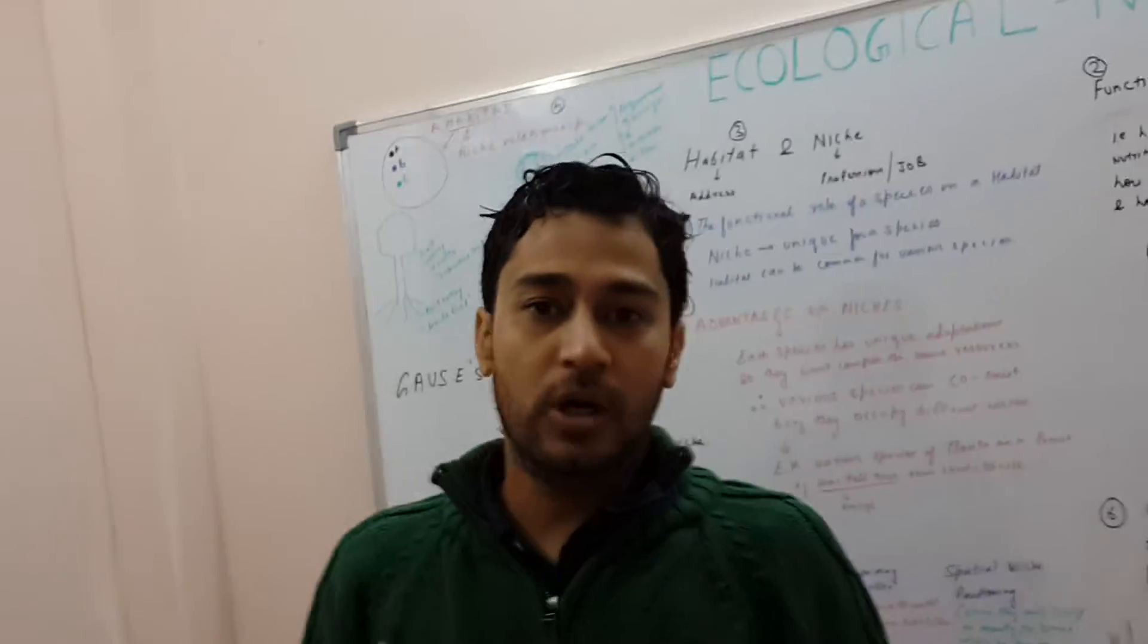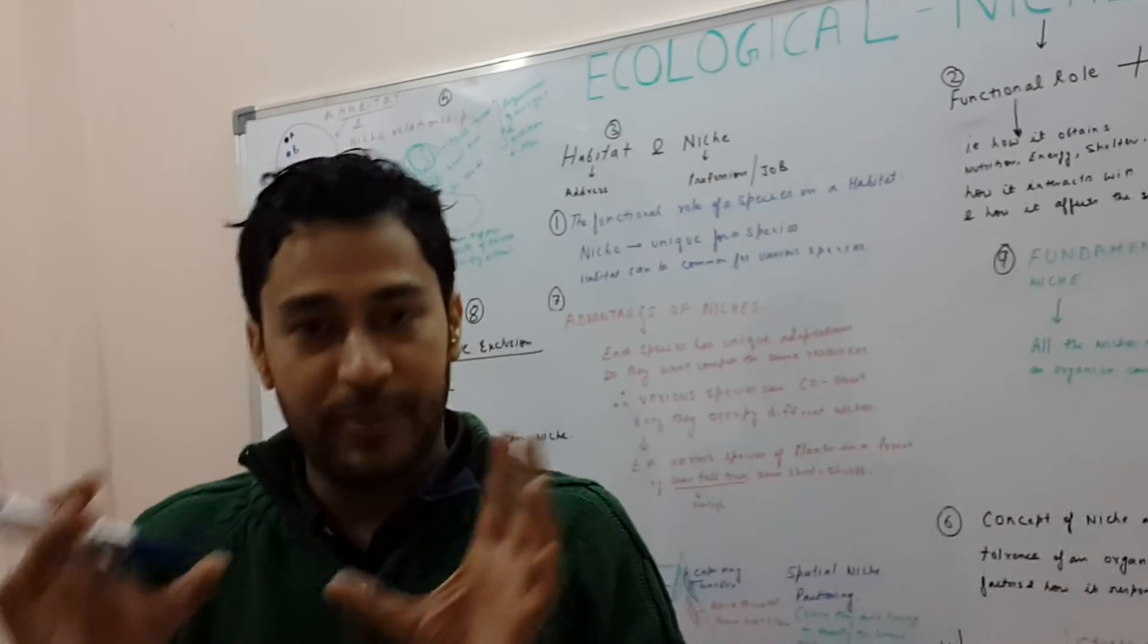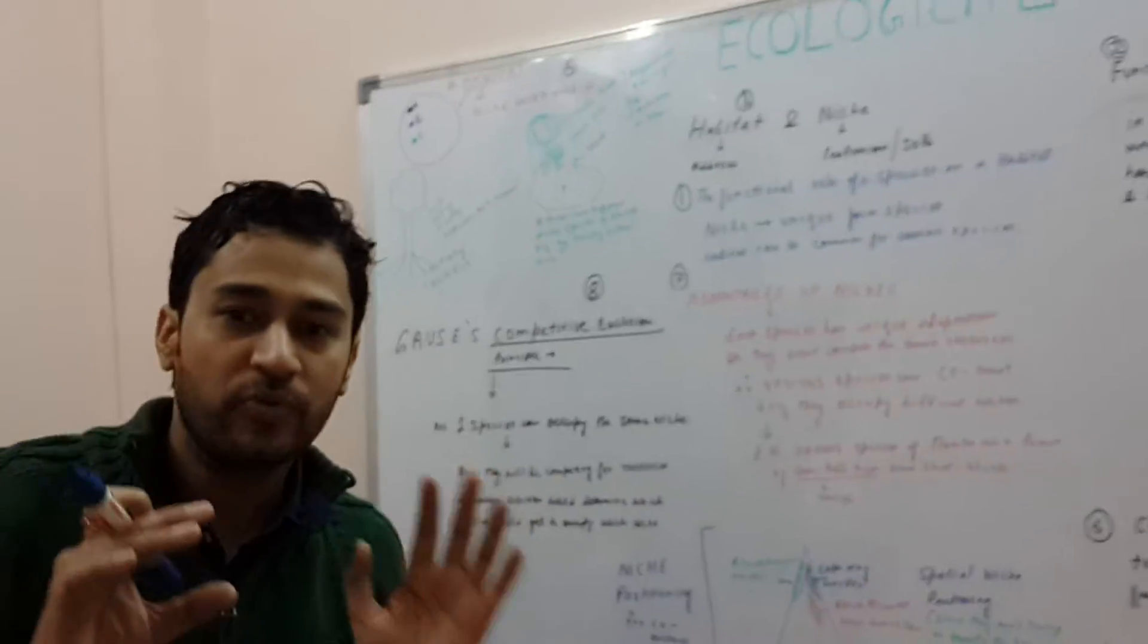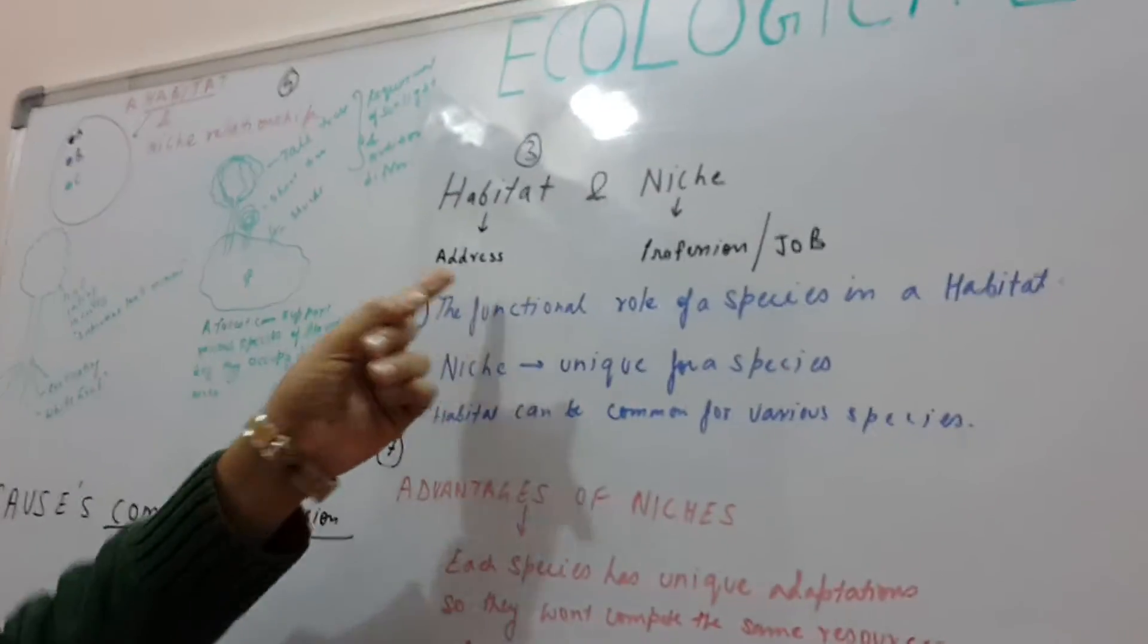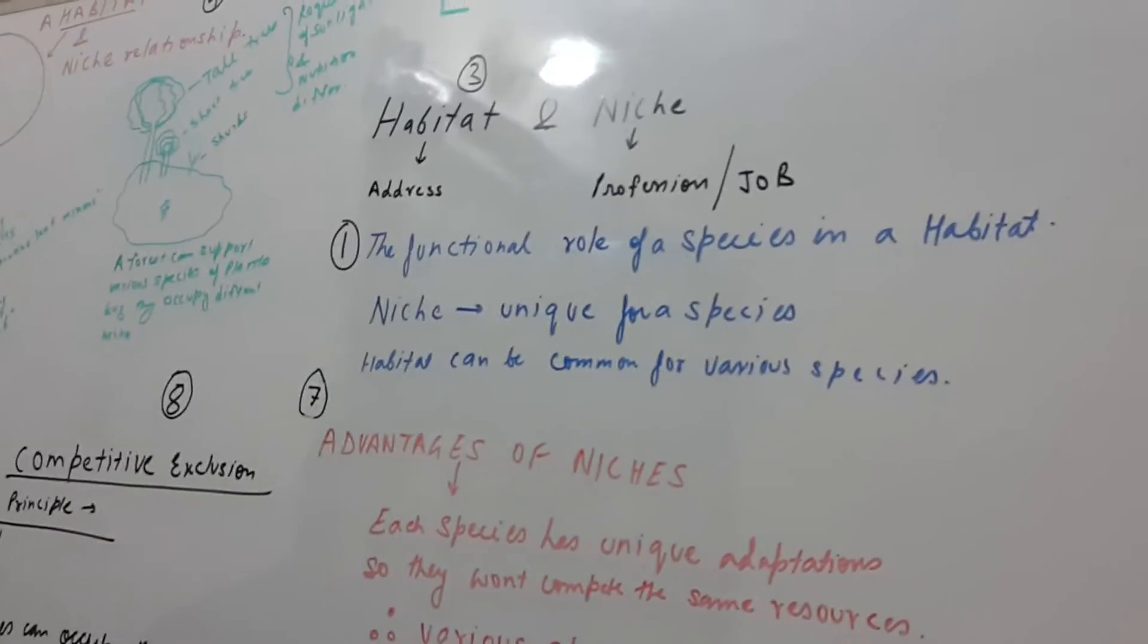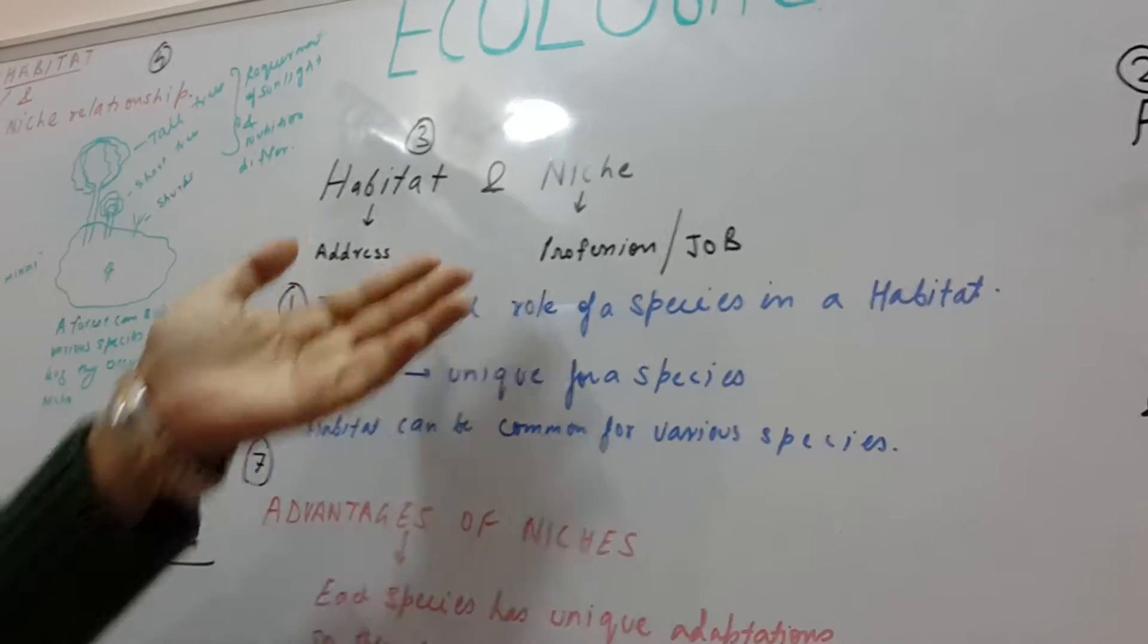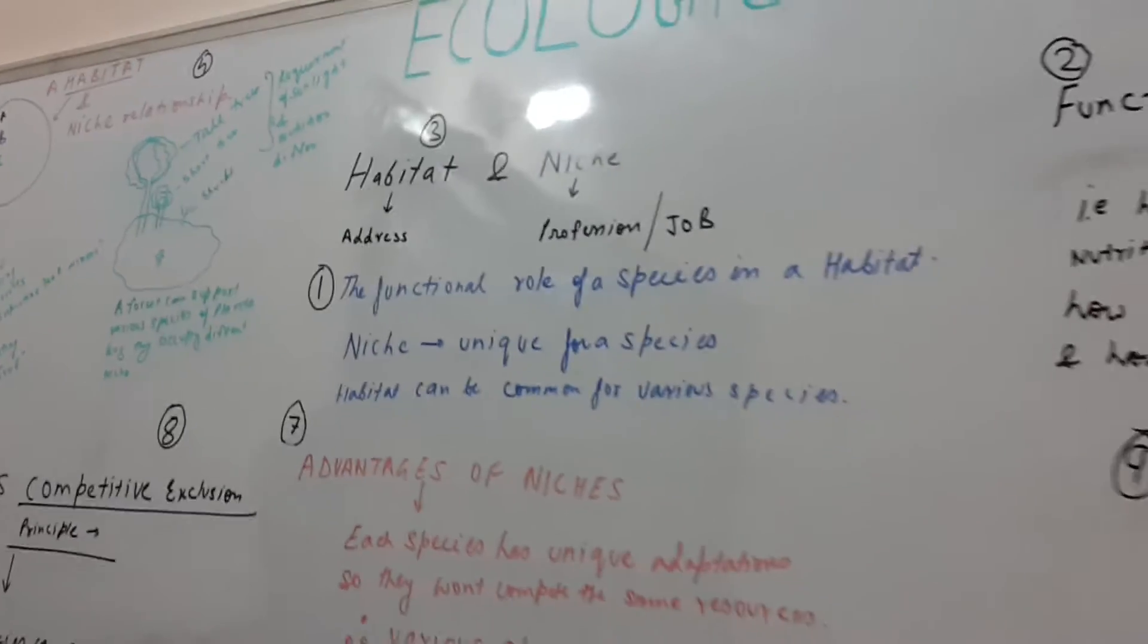Now I would also like to talk about the relationship between a habitat and a niche. To very simply put it, we can say the habitat can be called the address of the organism and niche can be called the profession or job of the organism.